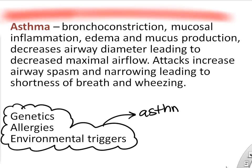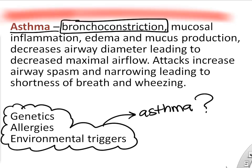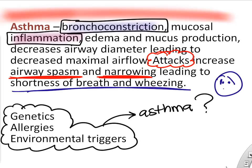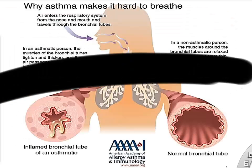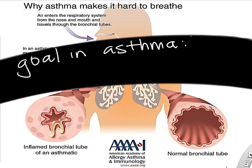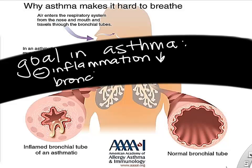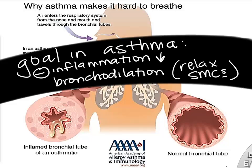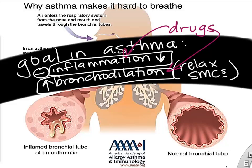Asthma has complex causes involving genetics, allergies, and environmental triggers. It causes bronchoconstriction and inflammation, narrowing of the airways, and sometimes during an asthmatic attack that can be dangerous or deadly. Goals to treat asthma are to knock down the immune response and decrease inflammation, while also promoting bronchodilation — relaxing smooth muscle cells to enlarge those airways. Drugs usually target both mechanisms: decreasing inflammation and increasing bronchodilation.